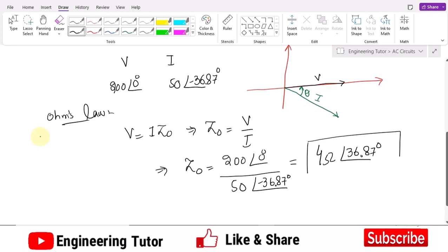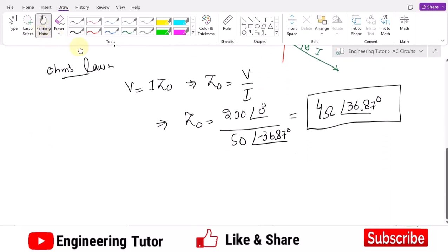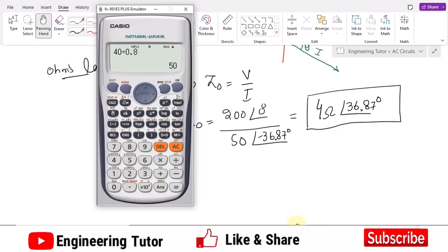But we are asked to find it in rectangular form because in that manner I would clearly know what is the actual resistance and what are the reactive elements available in my load. Let me do it in polar form here. That is 4 and the angle is 36.87.